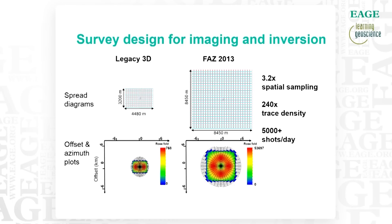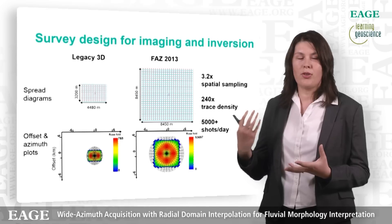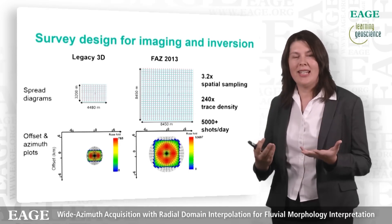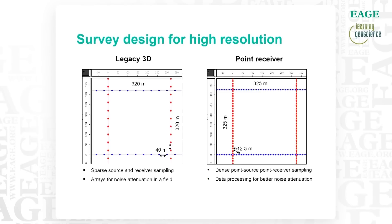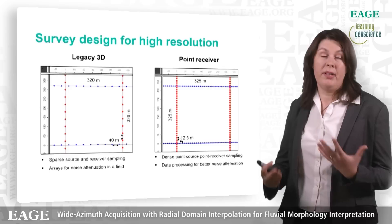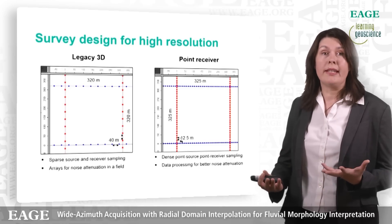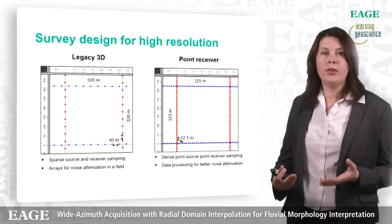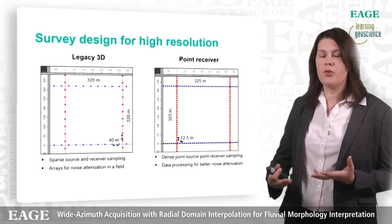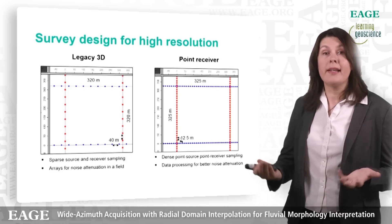To be able to shoot the survey in non-geological time, you need special acquisition techniques and need to shoot at least 5000 shots a day. We not only improved the overall size of the patch but also improved the micro-geometry. The macro geometry — essentially the line spacing — is limited by environmental constraints, so between the legacy 3D and the new survey it is comparable at 320 versus 325 meters. The main difference is that instead of relying on source and receiver arrays and sparse spacing for noise integration in the field, we propose much denser point source, point receiver sampling and rely on data processing for noise integration.